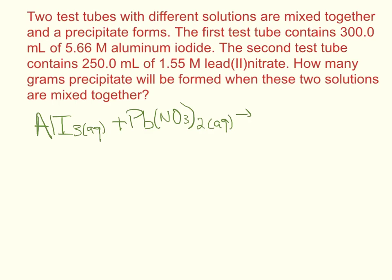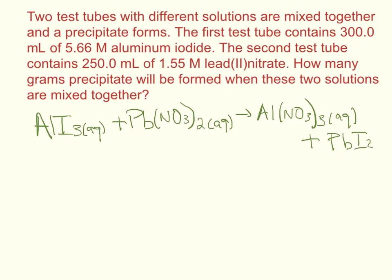When we do the double displacement, aluminum is going to go with the nitrate — and there are going to be three nitrates. Check your solubility table and you'll find that aluminum nitrate is aqueous. The second product is lead iodide, and when we check our solubility table we find that it is a solid.